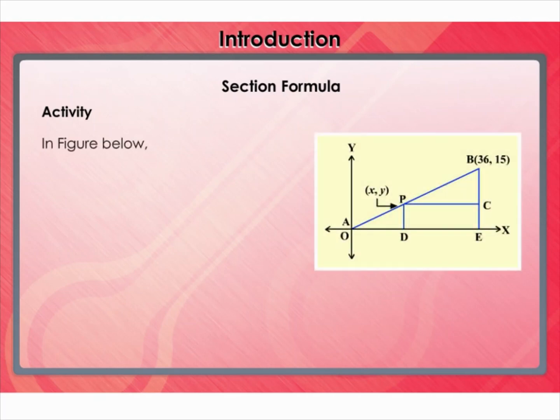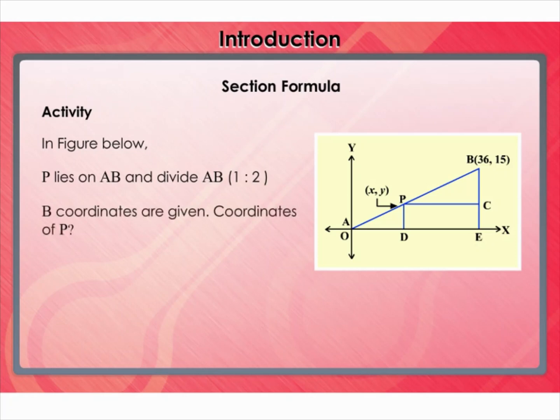Introduction: Section Formula. Let's begin with a small activity. In the figure, if P lies on AB, it will divide AB in the ratio 1 is to 2, and P coordinates are given. How can you find the coordinates of P?